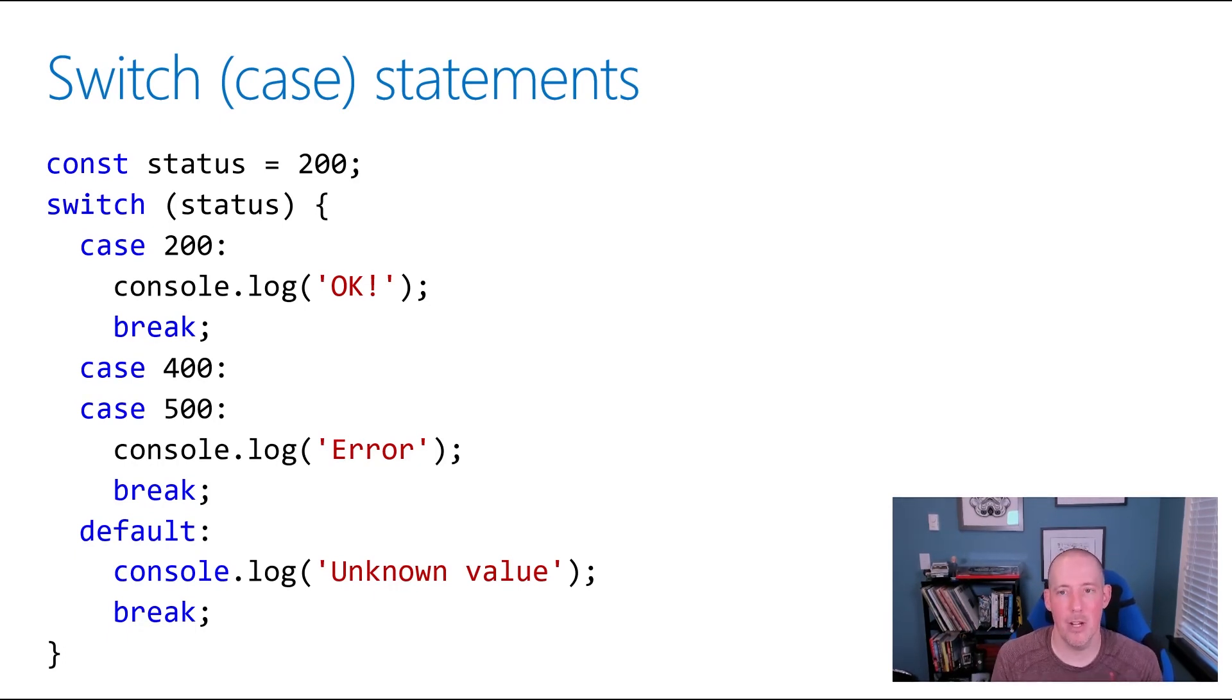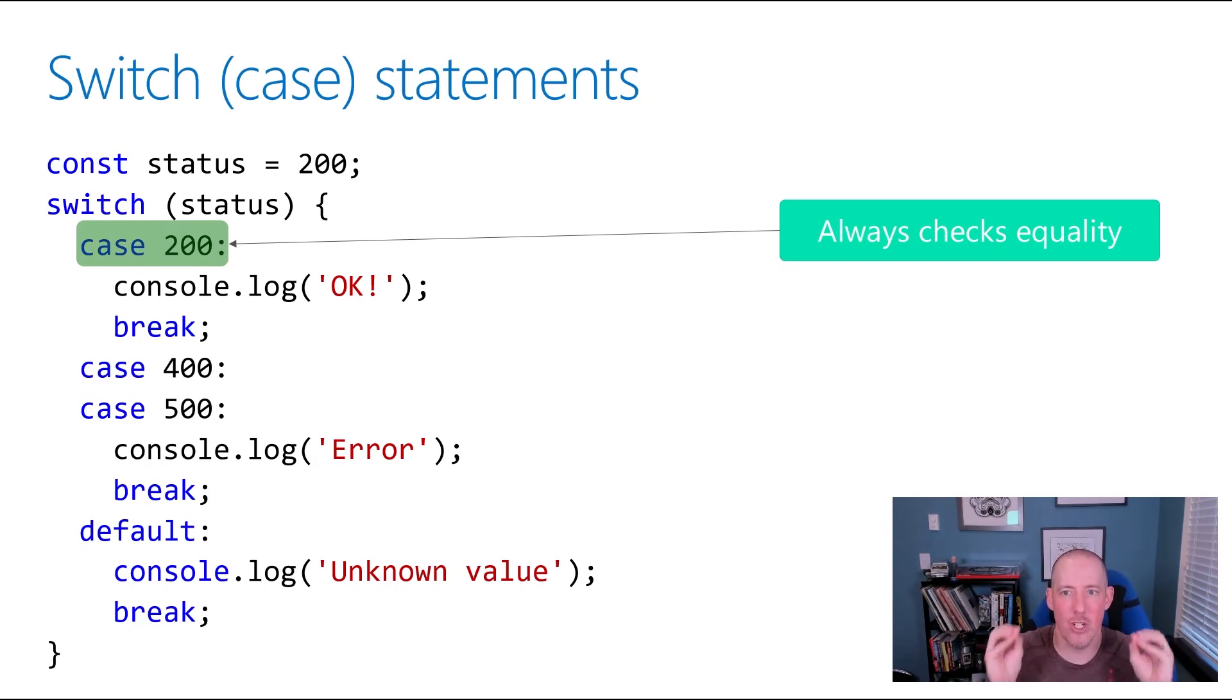Now, the couple of things that I want you to notice here, number one is the fact that it's always going to check for equality. So I'm not able to do less than or greater than here. Now, fortunately, one thing that I can do is stack one after the other. So that second block that you're seeing there of that case 400, case 500, that's basically like an OR. So if it's 400, it would run the code, and if it's 500, it would run the code.